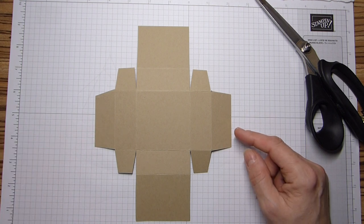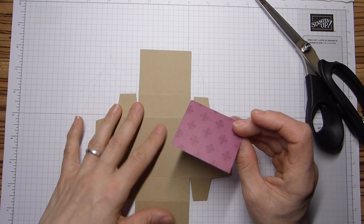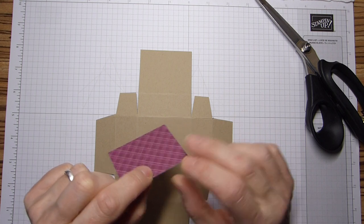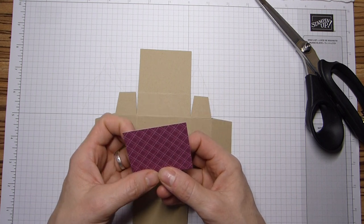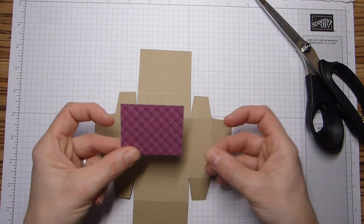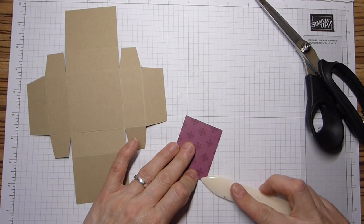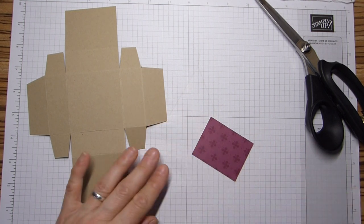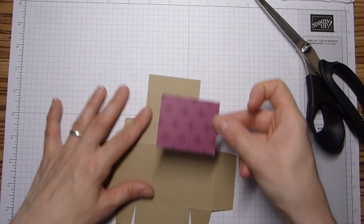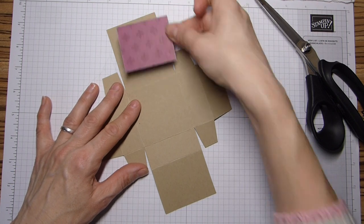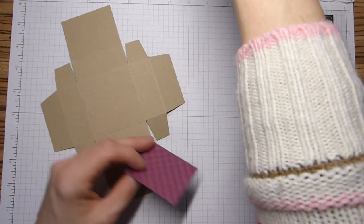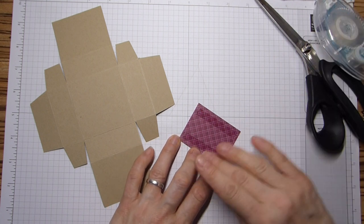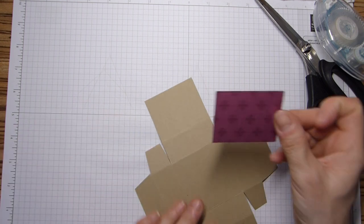So when you're finished, you're left with this shape. And then you need a piece of DSP. I've gone with the Regals. This is the new one that we will be getting beginning of May. Your DSP will go on either side, it doesn't matter because it will fit both. And it is two and three eighths by one and seven eighths or in centimetres, 6.3 by 4.8.